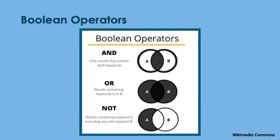In PubMed, any time you use OR, AND, or NOT as a connector, these are called Boolean operators. Keep in mind, any time you use OR to separate two words, those words should always be placed inside the same set of parentheses, because you're telling the database that either term is okay — they are interchangeable. If you don't put the parentheses there, it will get confused and won't combine those terms with the rest of your search statement. The Boolean operator AND connects separate concepts and is outside of the parentheses. We didn't use NOT as a connector, but this operator excludes terms.